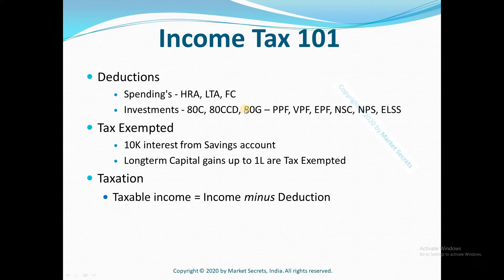In addition to this, there are a few other tax exemptions provided by the government. Two commonly used items are: one, your interest up to 10,000 rupees from your savings account will be completely tax exempted; and two, your long-term capital gains up to 1 lakh are completely tax exempted. We will discuss the other options available in the forthcoming sessions.